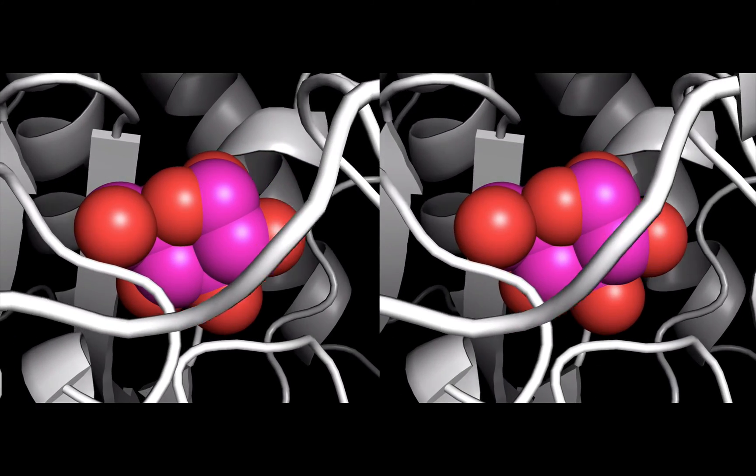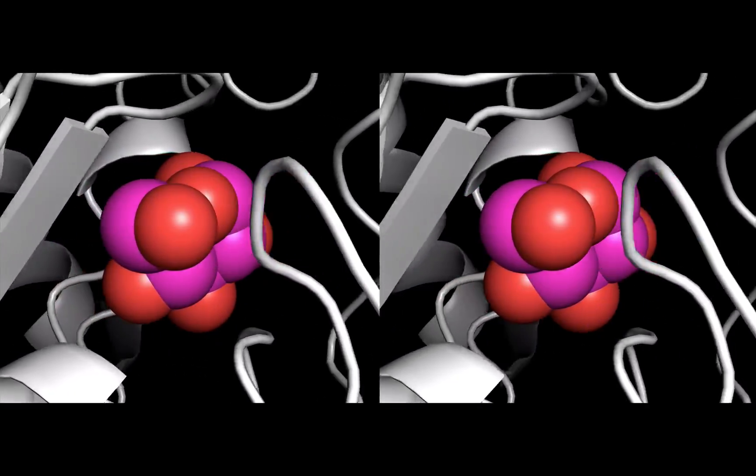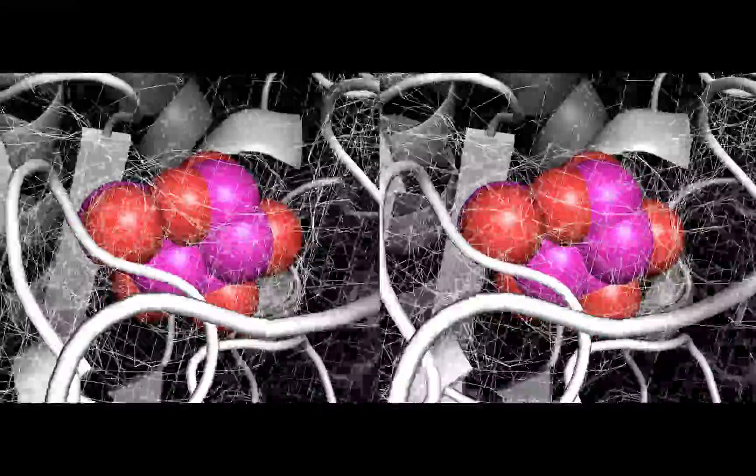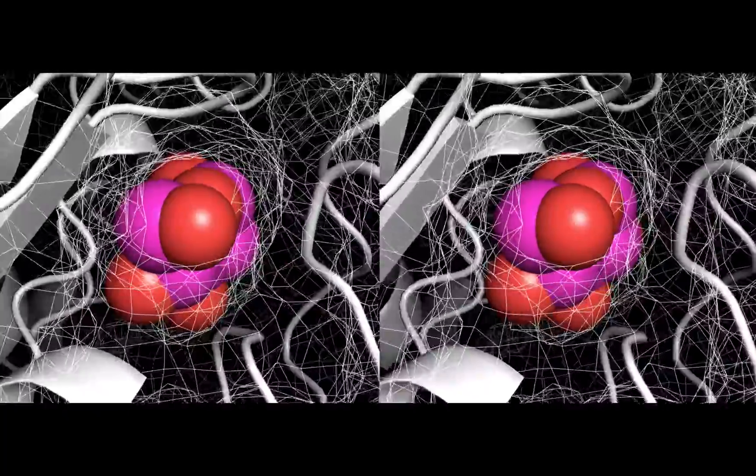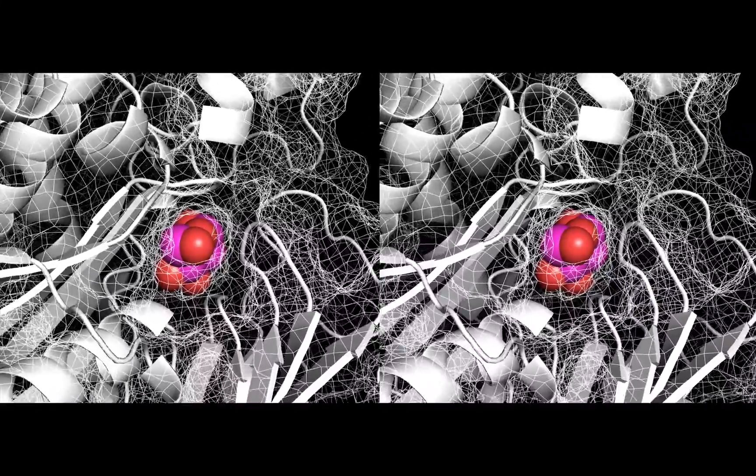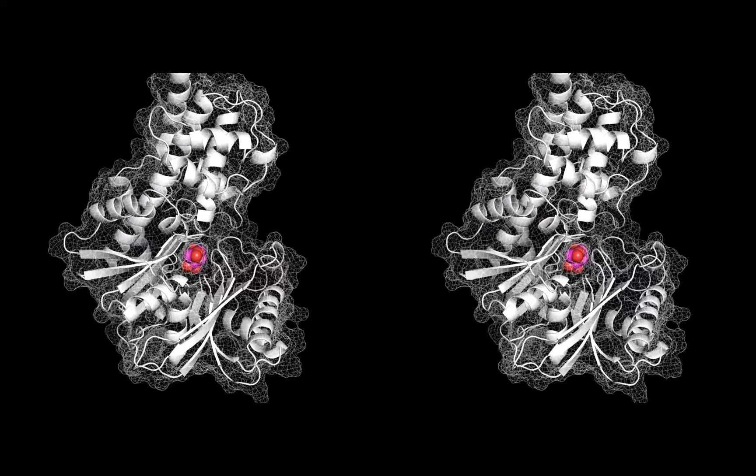Maybe we want to keep in mind where the surface of the protein is. So let's overlay a see-through mesh onto the ribbon diagram. Now, we have a sense of the surface of the enzyme, the secondary structure, and we can see the space that the glucose molecule occupies. Awesome!